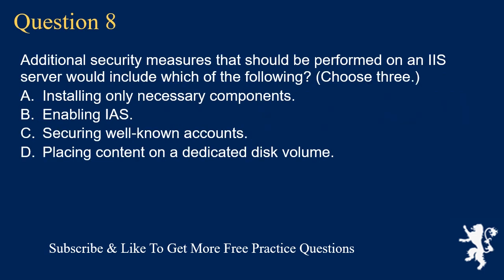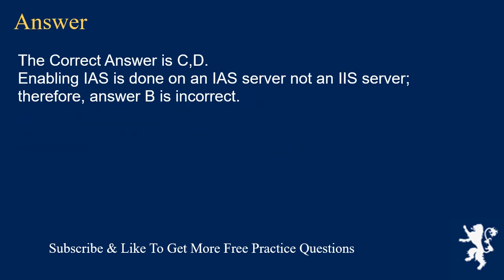Question 8. Additional security measures that should be performed on an IIS server would include which of the following? Choose 3. A. Installing only necessary components. B. Enabling EAS. C. Securing well-known accounts. D. Placing content on a dedicated disk volume. The correct answer is A, C, and D. Enabling EAS is done on an EAS server, not an IIS server. Therefore, answer B is incorrect.